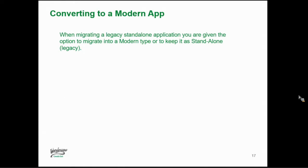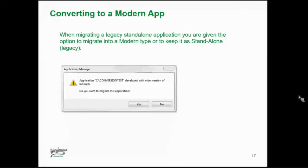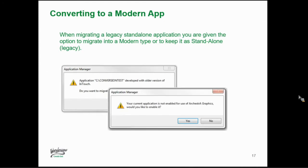We just have to go into the InTouch Application Manager and export it — I'll show you that in the demo. When we are migrating, it really is very simple. When we open up that old InTouch app, it's going to give us an option and ask if we want to migrate. If we said no, it would just shut down because we can't keep it as a 9.5 application and open it in 2014 R2. Then a next pop-up gives the option — it'll say the app is not enabled for Orchestral Graphics, would you like to enable it? If we say yes, it creates a modern InTouch app and allows us to use Orchestral Graphics.